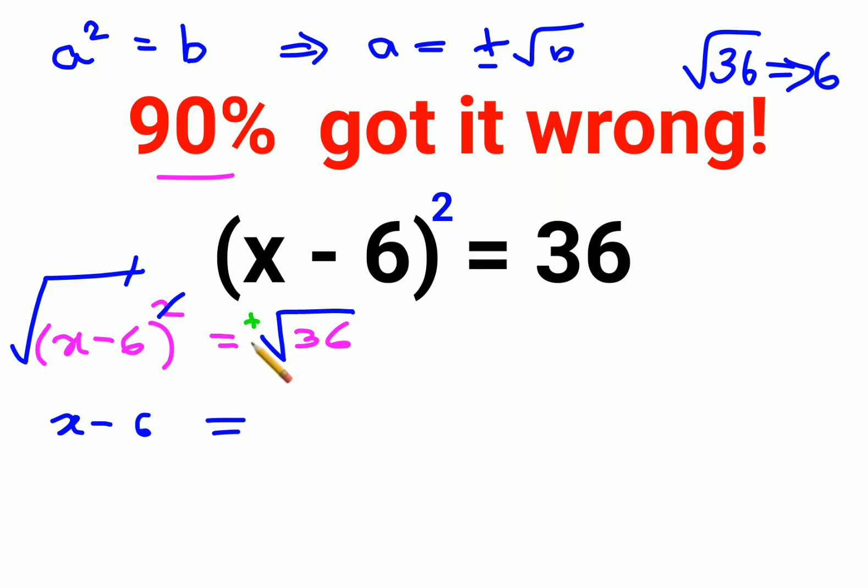So here again, we'll take because there is a variable involved, we'll take plus or minus sign ahead of root of 36. So answer comes out to be plus minus 6.